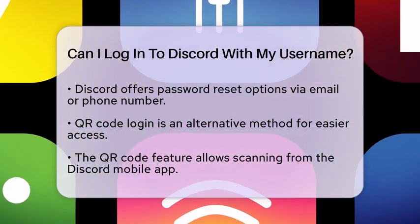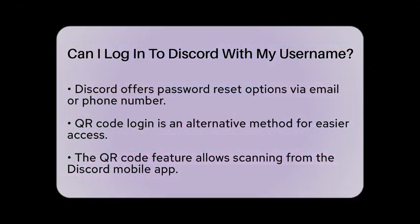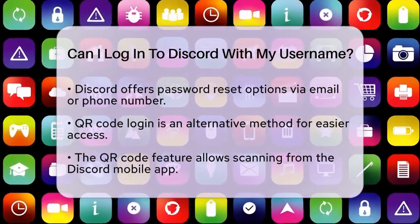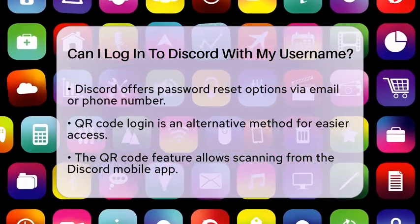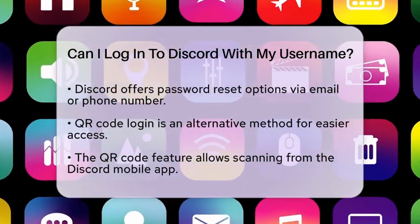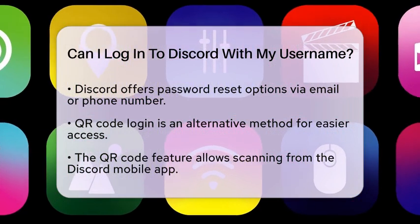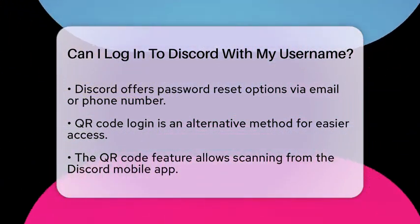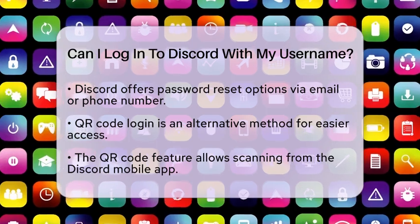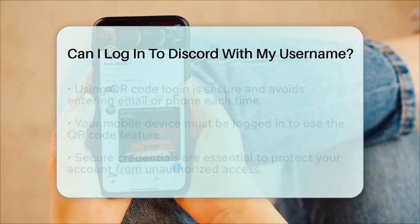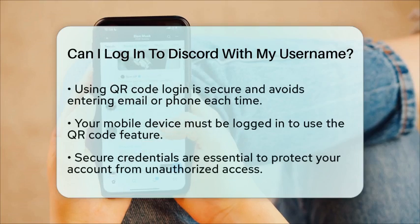Additionally, Discord offers alternative login methods that can make the process easier. One such method is the QR code login. This feature allows you to use the Discord mobile app to scan a code displayed on your desktop or web browser. This method is secure and convenient, as it does not require you to enter your email or phone number each time. However, it does require that your mobile device is already logged in to your account.